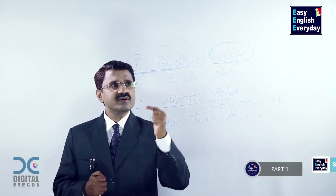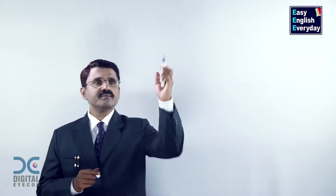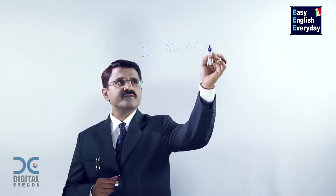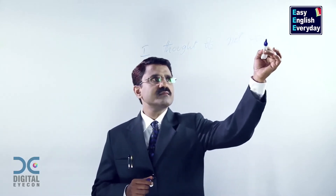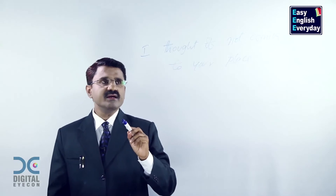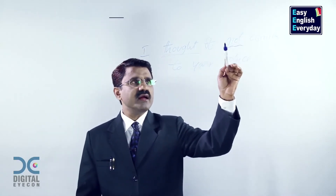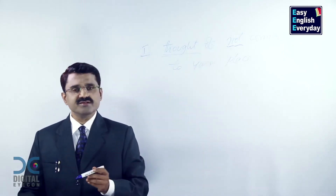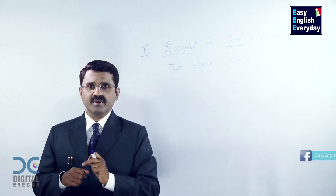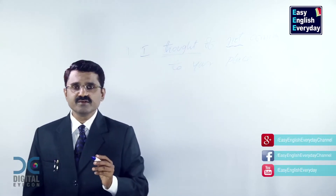This is part one. Now we are going to learn how to make this part negative. Look at these examples. I thought of not coming to your place. In the earlier category, we converted the main verb part into negative form. But here, we are adding the negative part — NOT — inside. I thought of not coming to your place. What does it mean? In the past, I planned not to visit your place. I thought of what? Not coming to your place. This is another way of using the same expression.